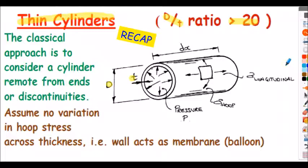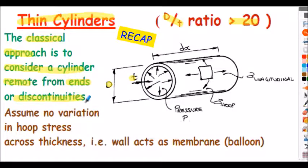That's key for what we're doing. This theory applies quite accurately and is relatively simple to use. When we come to thick cylinders it's a bit more complicated because we have much smaller d/t ratios and the assumptions we make here are not applicable there. This is a classical approach: we assume the cylinder is remote from the ends of a pipeline, not near flanges, and there are no discontinuities.